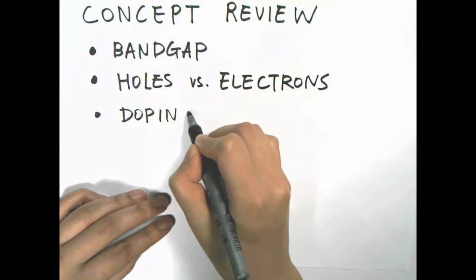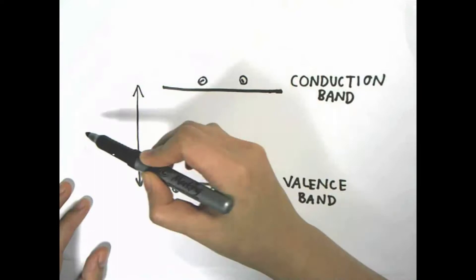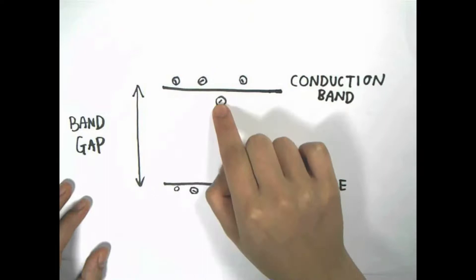In a semiconductor, electrons can either reside in the valence band, which is lower energy, or the conduction band, which is higher energy. The energy difference across them is called the band gap. If electrons get enough energy to jump across the band, it leaves an empty electron slot behind, and we call that slot a hole.